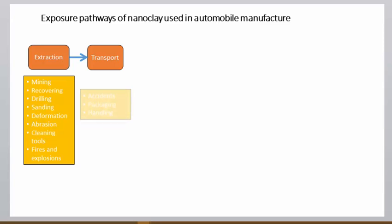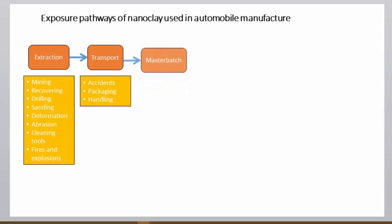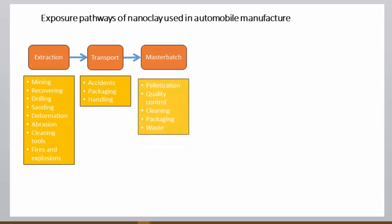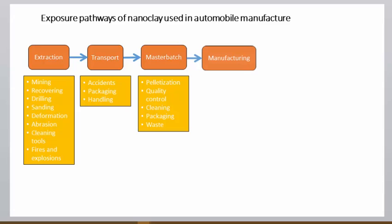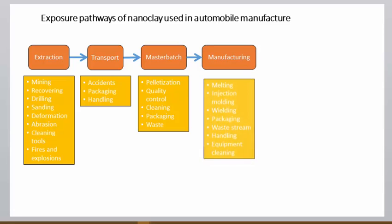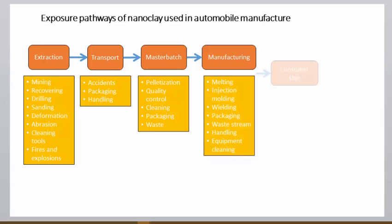Potential sources of exposure during master batch include pelletization, quality control, cleaning, packaging, and waste. Potential sources of exposure during manufacturing include extrusion, melting, injection or molding, packaging, waste stream, handling, and equipment cleaning.